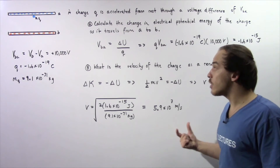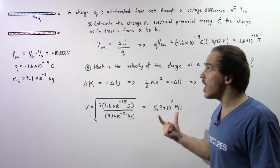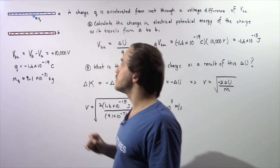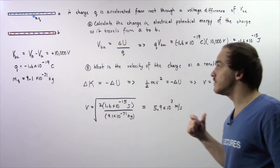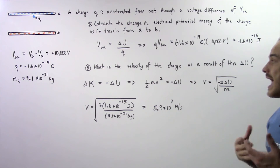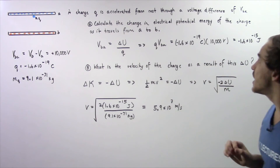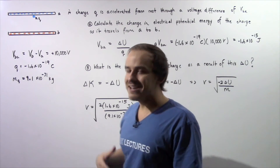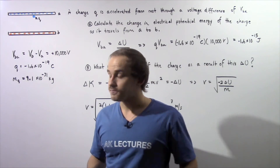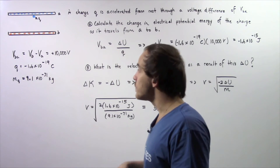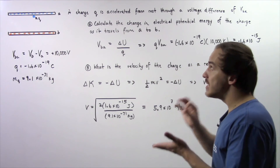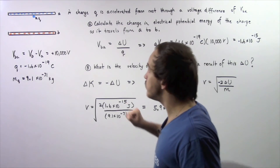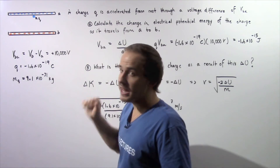This is the velocity of our charge when it reaches position B. It gains this velocity as a result of its loss in electric potential energy. Once again, because there is a voltage difference between plate A and plate B, our charge gains kinetic energy as a result of that difference in voltage.